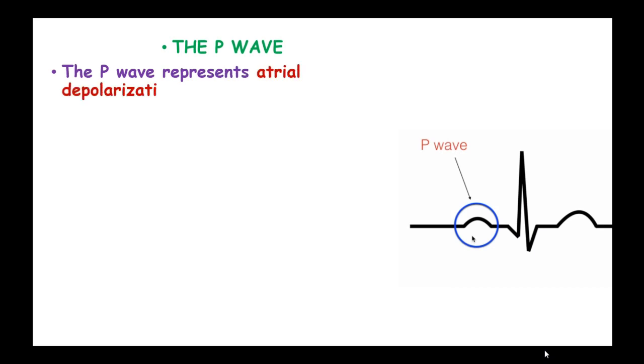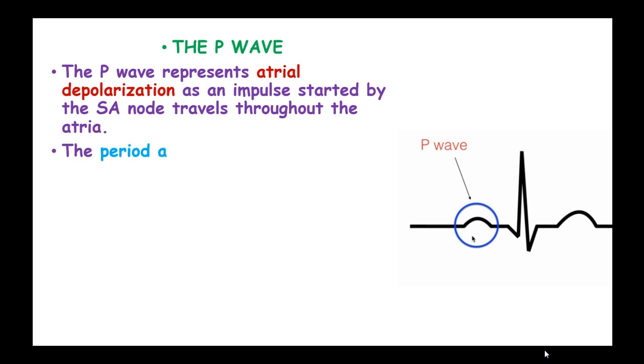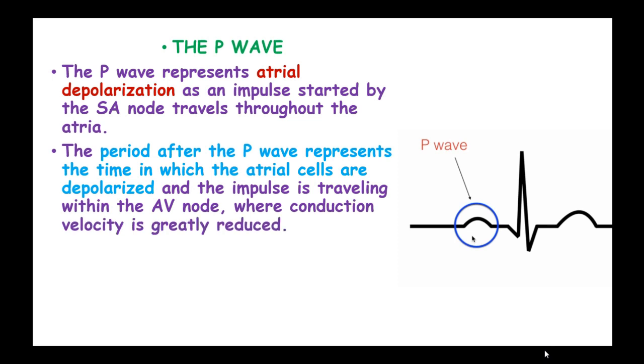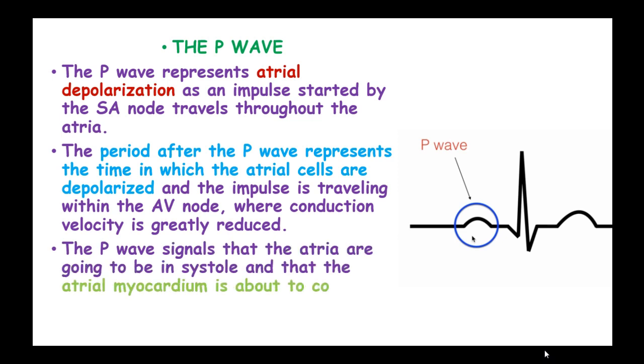P-wave. The P-wave represents atrial depolarization as an impulse started by the sinoatrial node travels through the atria. And the period after the P-wave represents the time in which the atrial cells are depolarized and the impulse is traveling within the atrioventricular node where conduction velocity is greatly reduced. The P-wave signals that the atria are going to be in systole and that the atrial myocardium is about to contract. It is usually about 0.08 to 0.1 seconds.